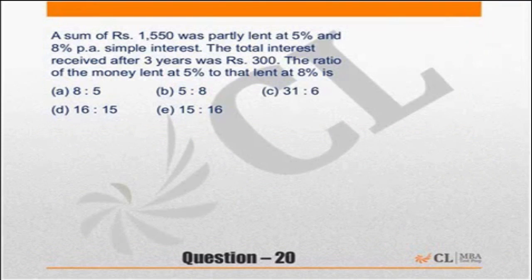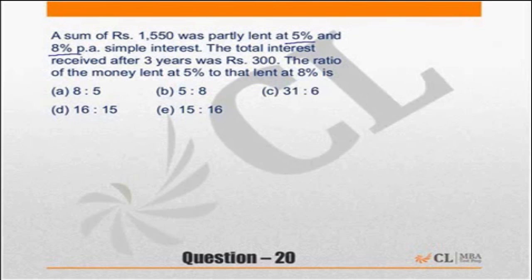A sum of ₹1550 is lent partly at 5% and partly at 8% simple interest. The total interest after 3 years is ₹300. Find the ratio of money lent at 5% to money lent at 8%.